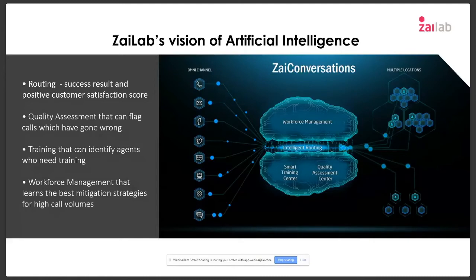The third component is training. If agents are not performing well, the AI will start sending training to them. Agent scores from training feed back to the AI, allowing it to identify the strengths of specific agents — for instance, very good in sales, not good in collections, or types very well. That's the kind of information the AI needs to build an increasingly accurate picture of each agent.